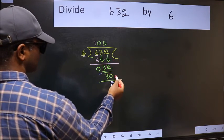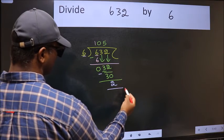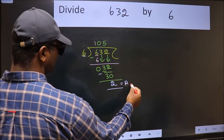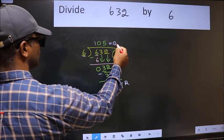No more numbers to bring it down. So we stop here. This is our remainder and this is our quotient.